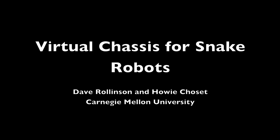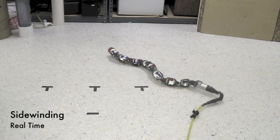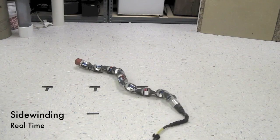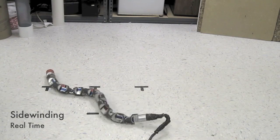The virtual chassis is a new method for defining body coordinate frames for snake robots. Modeling motion from the snake's perspective is often difficult because of the way the snake's internal shape changes interact with the world.